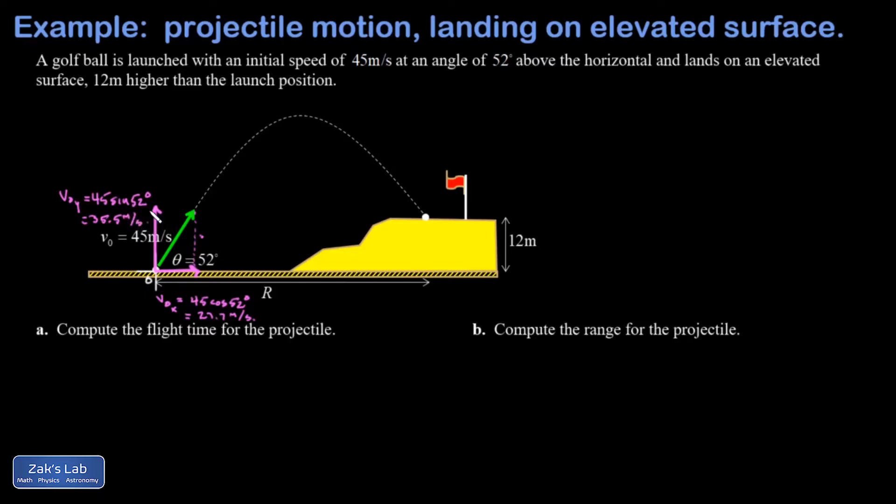In part a I'm asked to get the flight time for the projectile, and so the way to get a handle on this is to ask what do I know at the end of the flight. Is it something about x or something about y? And in this case it's something about y. Y is equal to 12 meters. I'm told that this is an elevated surface 12 meters above the starting point, so given that I have this little bit of extra information about y, that's how I'm going to attack the flight time problem.